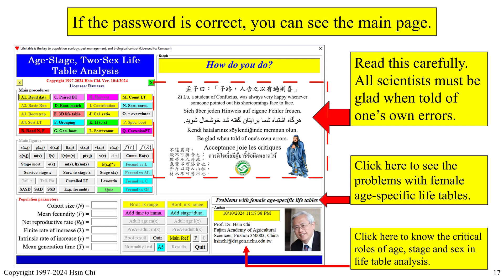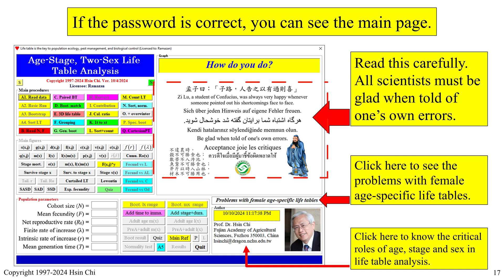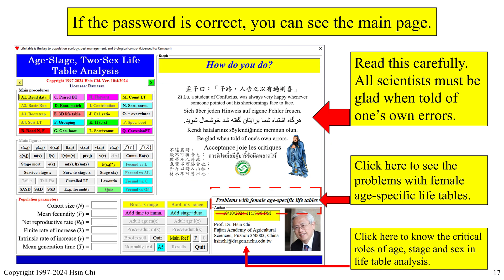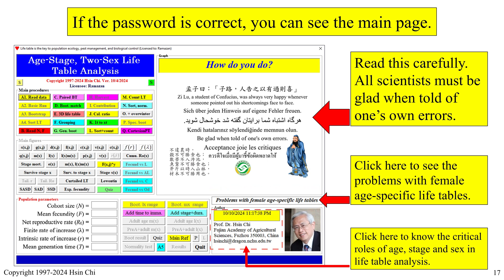Read the main page carefully: 'All scientists must be glad when told of one's own errors.' Click here to see the problems with female age-specific life tables, and click here to learn the critical roles of age, stage, and sex in life table analysis.